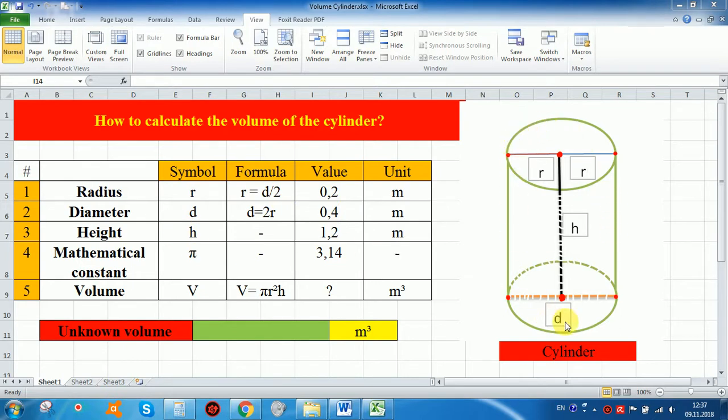Let's calculate one example cylinder. I put here value of the radius 0.2. From the formula, if radius is 0.2 meter, diameter will be 0.4. Height is 1.2, and mathematical constant is always 3.14.